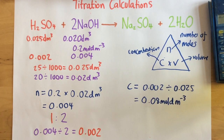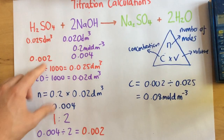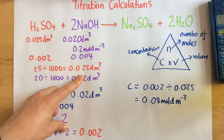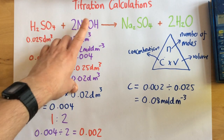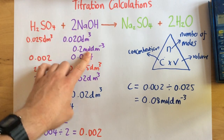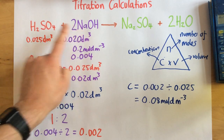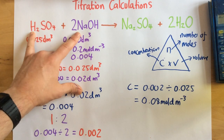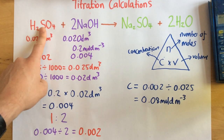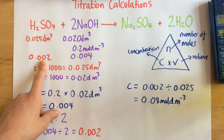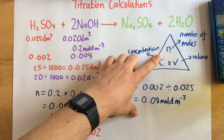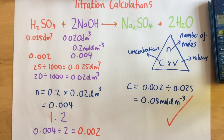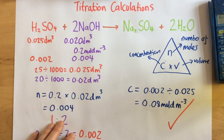Just to recap: first, write down your information and convert everything to dm³. Then find the number of moles of sodium hydroxide using C × V. Next, look at the symbol equation to find the molar ratio, and use it to figure out the number of moles of sulfuric acid. The final step is to use the equation again — N ÷ V — to find the concentration of the acid, which is what we set out to do. Thank you very much.